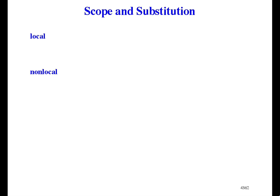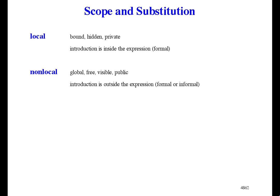The final topic this lecture is scope and substitution. A function introduces a local variable, which the body of the function can refer to. But the body can also refer to other variables, which are non-local. Some people use the word global instead of non-local. Some people call them bound and free variables. Some people call them hidden and visible variables. Some people call them private and public variables. That's a lot of terminology. I'll just stick with local and non-local. A variable is local to an expression if the variable is introduced using the function notation within the expression. Otherwise, it's non-local.